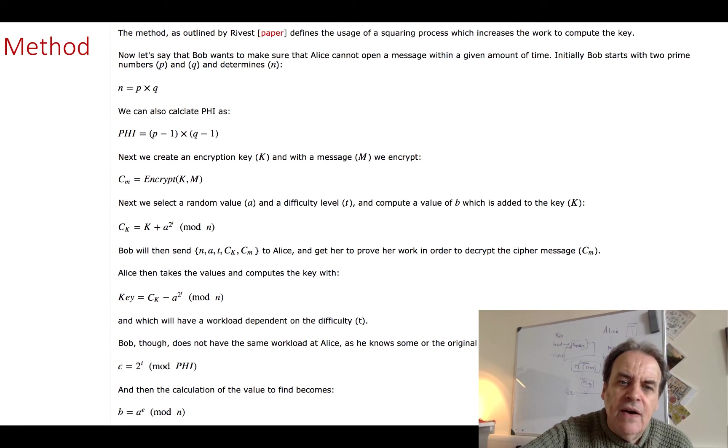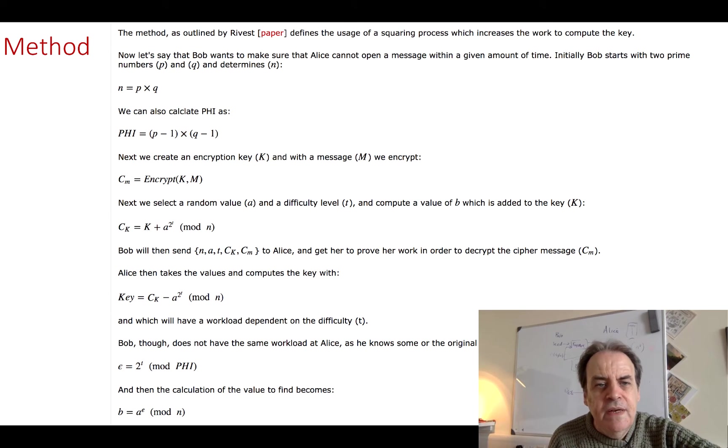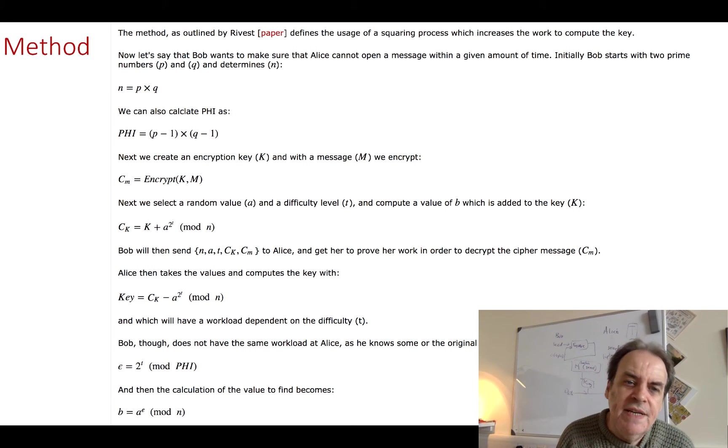Then we calculate this value to be k, our key, plus a to the power of 2 to the power of t and mod n. And then we send the value of n, a, t, Ck the key with the workload, and also the cipher message.